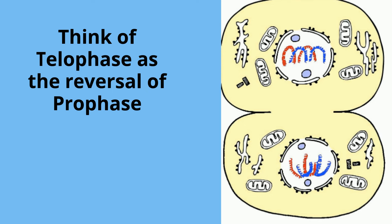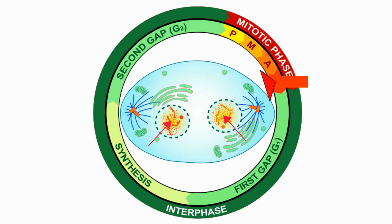Now that the two sets of daughter chromosomes are encased in a new nuclear envelope, they begin to spread out again. When this occurs, it is the end of telophase, and mitosis is now complete.